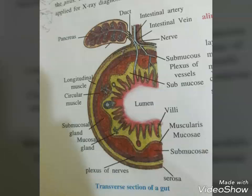The wall of the alimentary canal, from the esophagus to the rectum, possesses four layers: namely serosa, muscularis, submucosa, and mucosa.